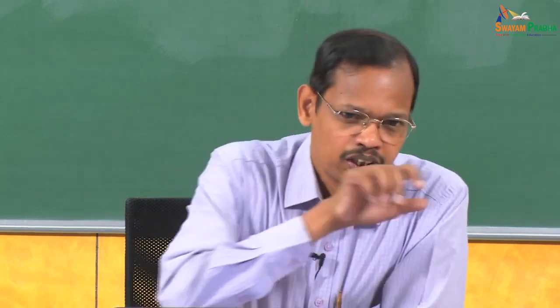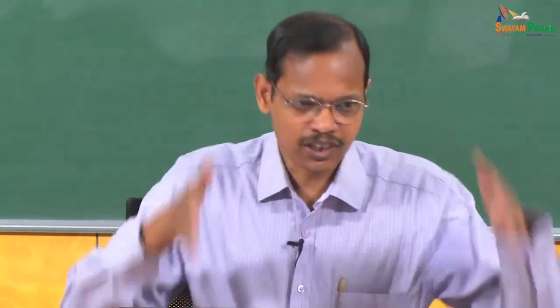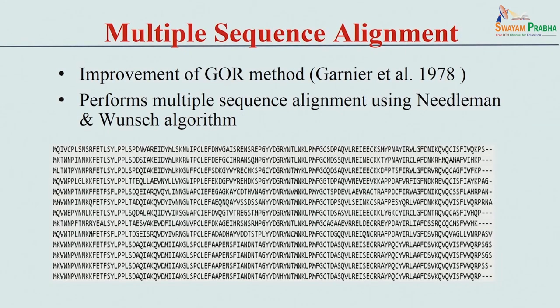How do you get the multiple sequence alignment? Take your sequence, get the homologous sequences, and align them. The program we use is ClustalW or Clustal Omega for multiple sequence alignment. For example, you take your sequence, obtain the homologous sequences, and get this multiple sequence alignment.